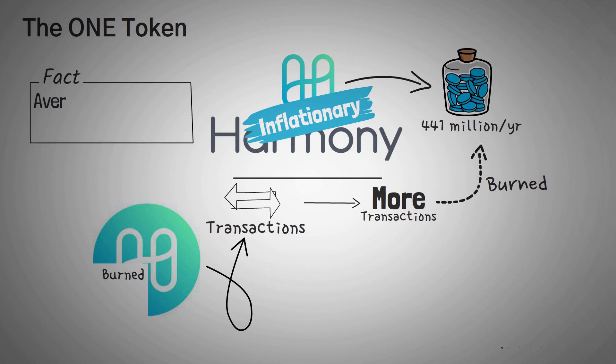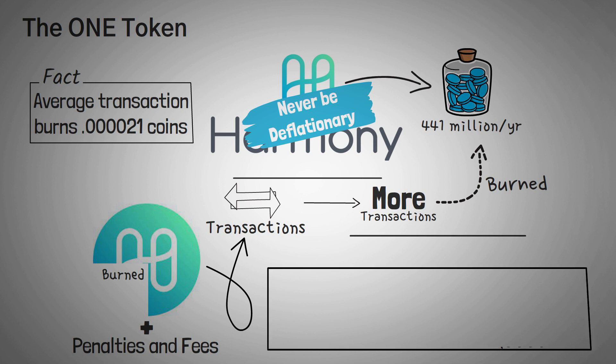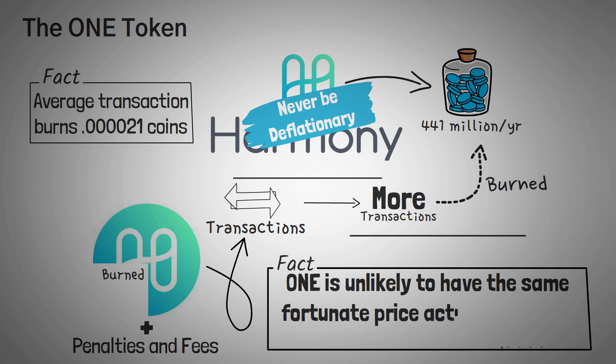However, it is worth noting that the average transaction burns only a very small amount of 1, around 0.000021 coins. One factor to consider here is that 1 can actually never be deflationary, as the tokens burned from penalties and the fees are actually taken out of the 441 million group that are minted. This means 1 is unlikely to have the same fortunate price action as Bitcoin, due to Bitcoin's deflationary pressure.